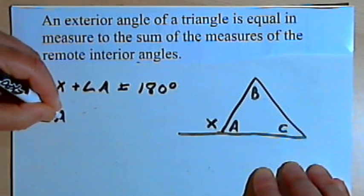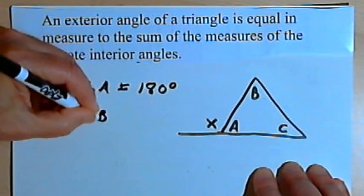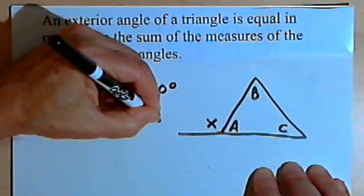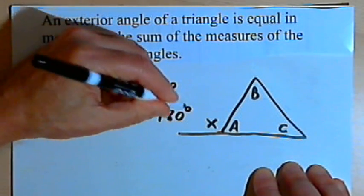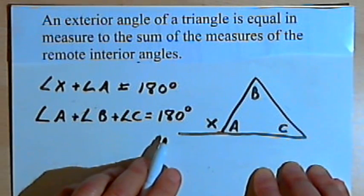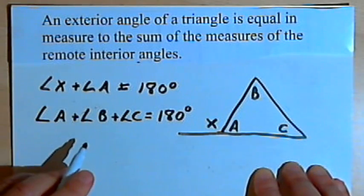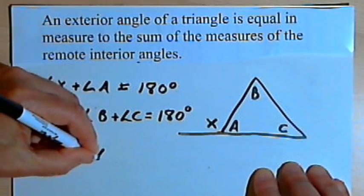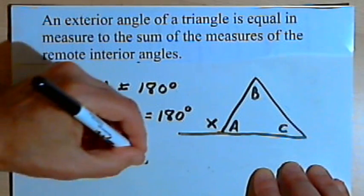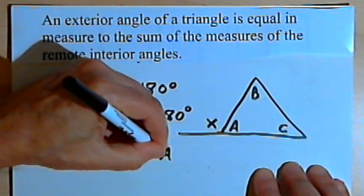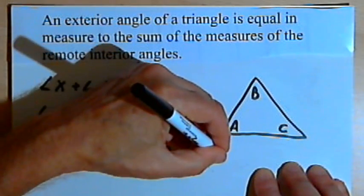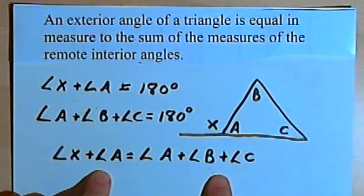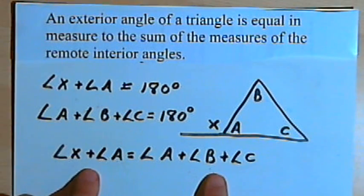And the three interior angles of any triangle will also add up to 180 degrees. So angle a plus angle b plus angle c equals 180 degrees. Now I can take those two facts and make this equation. Angle x plus angle a equals angle a plus angle b plus angle c. Because both sides of that equation are equal to 180 degrees, so they must be equal to each other.